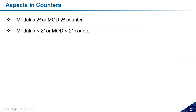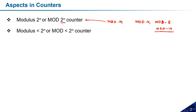Counters where the modulus equals 2^N exactly — like mod-4, mod-8, mod-16 — fall under the first category. Counters like mod-7 fall under the second category, where the modulus is less than 2^N. This second category is called modulus less than 2^N counter.